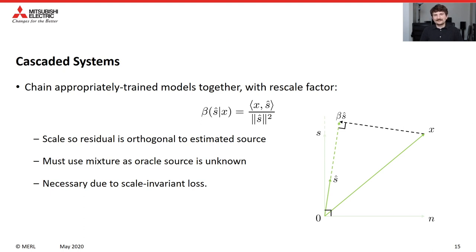We also found that a key component is the use of a rescaling factor between each model in the cascade — what we call CASTM. Since the models are trained with a scale-invariant loss, this is absolutely necessary, as the models have no reason to produce any particular dynamic range and there would be a mismatch from one model to the next. As a result, we rescale the estimated source such that it is orthogonal to the residual, using the mixture as reference since the oracle is unknown.